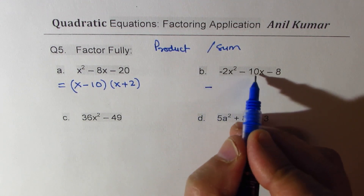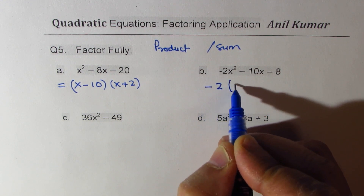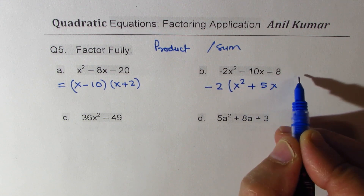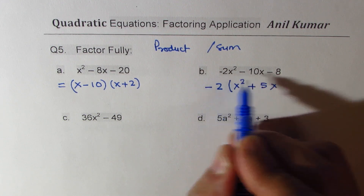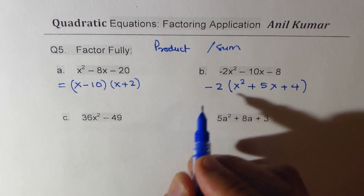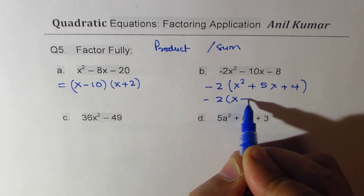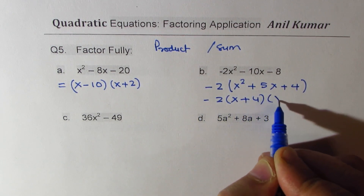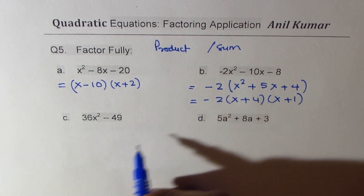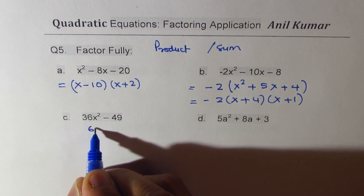First step: take -2 common, since all are even numbers. Then we get x² + 5x + 4. Product is 4, sum is 5, so we factor as (x + 4)(x + 1). That gives you the result.